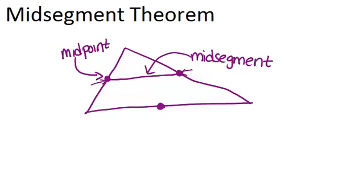There are two interesting properties that mid-segments have within their triangles. The first is that the mid-segment will always be parallel to the third side of the triangle. So those two sides are parallel.